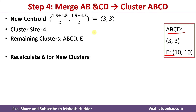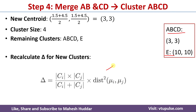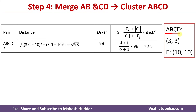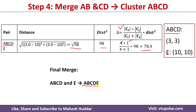We need to find the merging cost for the remaining clusters. The next pair is ABCD and E. For this we get the Euclidean distance as square root of 98, distance squared as 98, and a merging cost of 78.4. Here cardinality of CI becomes 4 and cardinality of CJ becomes 1, because the first cluster has 4 data points A, B, C, D. Since we have only one pair remaining, we merge them to get the final cluster ABCDE.